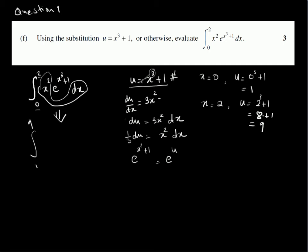e to the power of x cubed plus 1 becomes e to the u. And x squared dx is really 1 third du, as we said here.